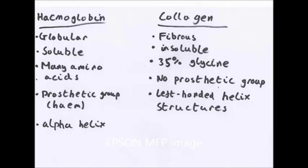Most of hemoglobin is alpha helix. Collagen is fibrous, insoluble in water, and it's 35% of just one amino acid, glycine. It has no prosthetic group, and it's mainly made of left-handed helix structures.